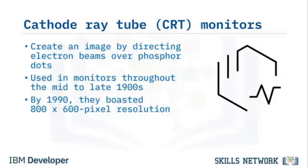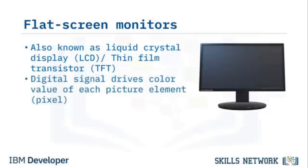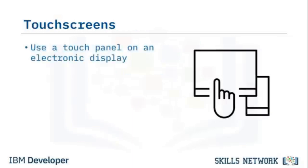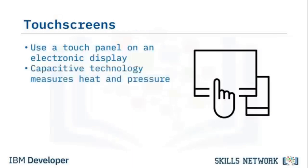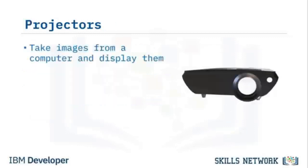By 1990, IBM's Extended Graphics Array (XGA) display boasted 16.8 million colors at 800x600 resolution. Flat screens, also known as LCD or TFT monitors, use a digital signal to drive the color value of each pixel, replacing larger and heavier CRT monitors. Touch screens use capacitive technology that measures heat and pressure and are often found on smartphones, laptops, and tablets. Projectors are output devices that display images from a computer onto a screen, wall, or other surface.